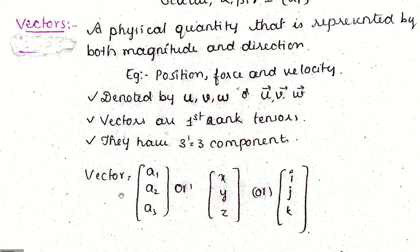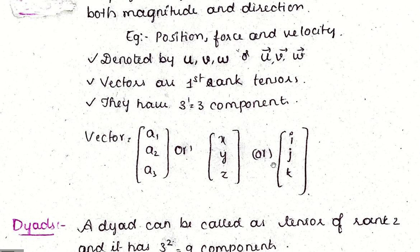power 1, that is 3 components. So a vector can be denoted by a1, a2, a3, or x, y, z. We can represent as a, b, c or i, j, k. So we can represent vectors in these ways.